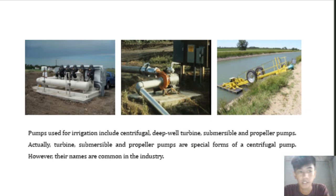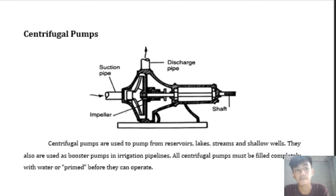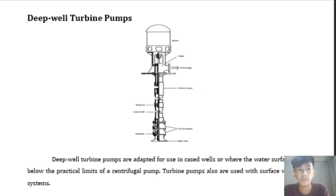Pumps used for irrigation include centrifugal, deep well turbine, submersible, and propeller pumps. Turbine, submersible, and propeller pumps are special forms of centrifugal pump, though their names are commonly used in the industry. Centrifugal pumps are used to pump from reservoirs, lakes, streams, and shallow wells, and are also used as booster pumps in irrigation pipelines. Deep well turbine pumps are adopted for use in cases where the water surface is below the practical limits of a centrifugal pump, and turbine pumps are also used with surface water systems.